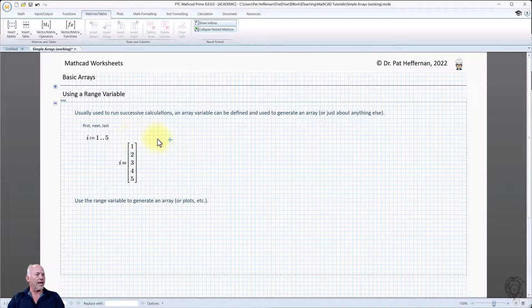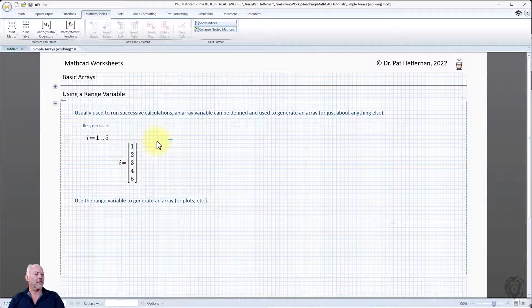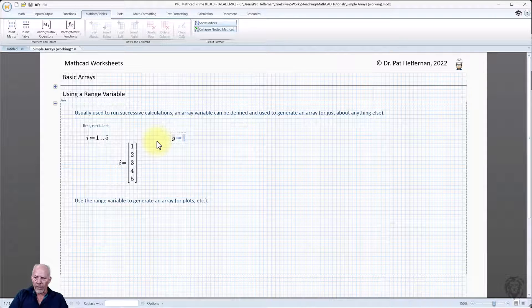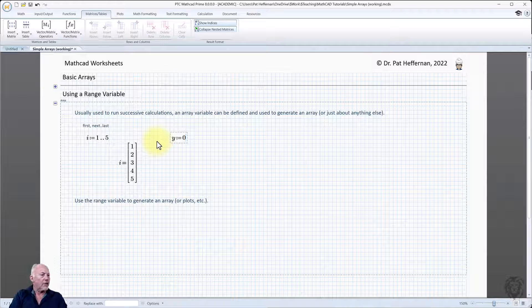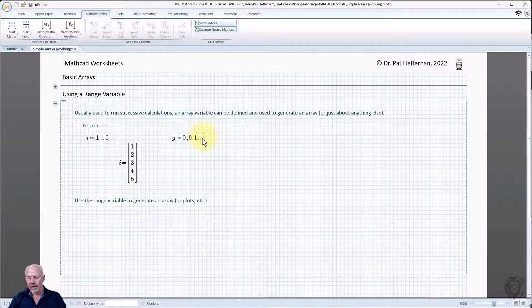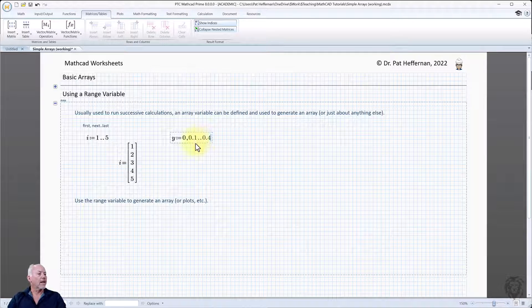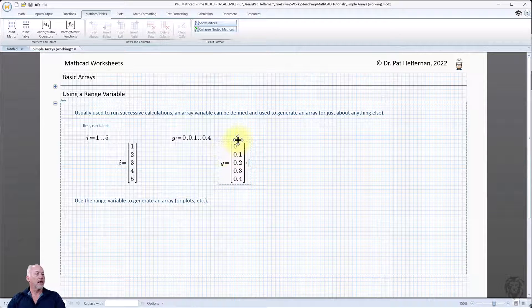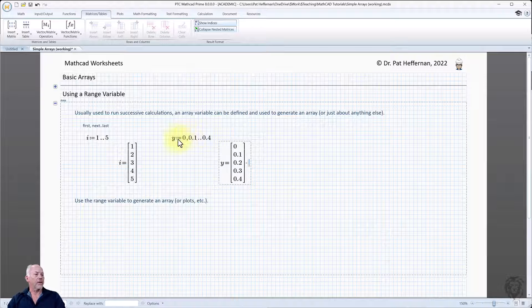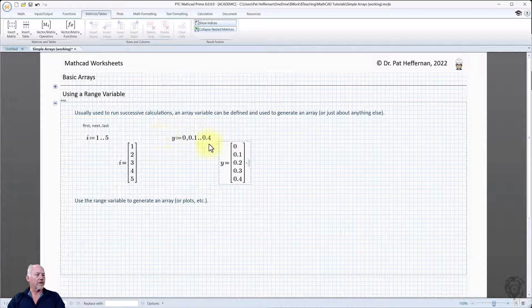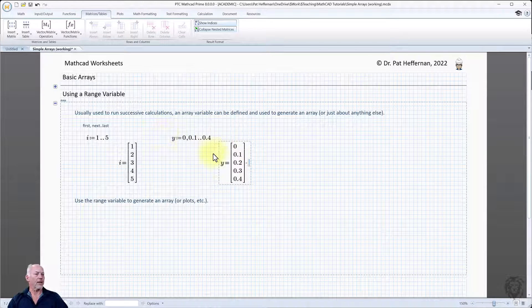I mentioned first, next, last. Let's use an explicit definition for the step. So I'm going to use Y in this case. And I'm just going to go from zero. I'm going to use a step. And so I'm going to put in a comma of 0.1. And I'm going to finish at 0.4. And so by doing that, then I can go down here and I can say Y is equal to. And you can see how this range variable is generated. This is just the display of the range variable. It is fully defined after we put it in up here.